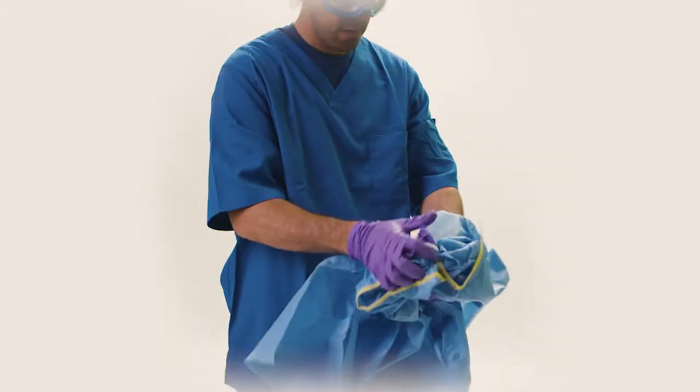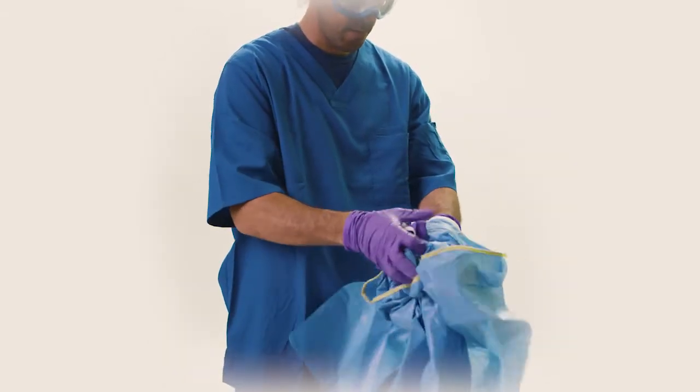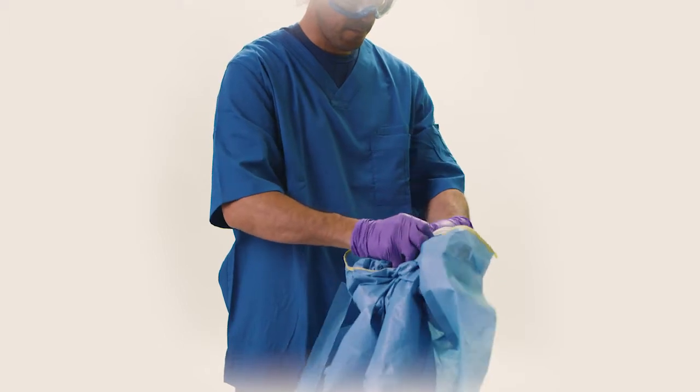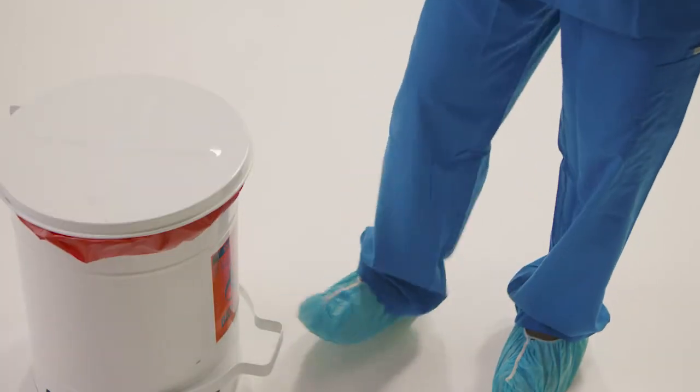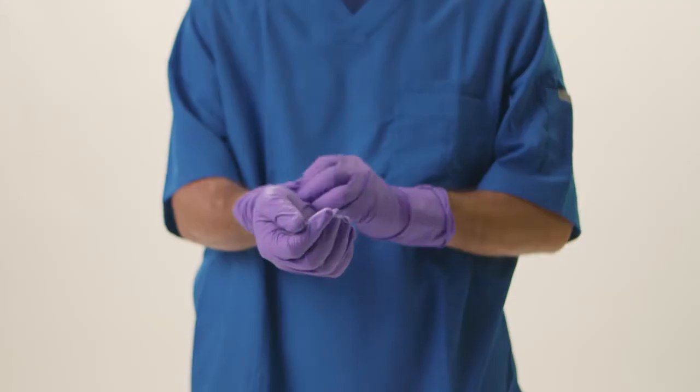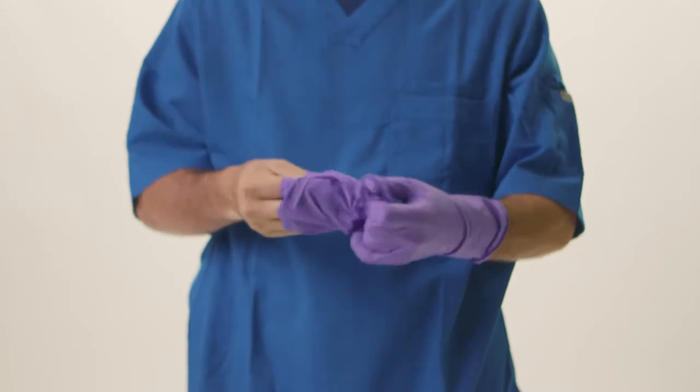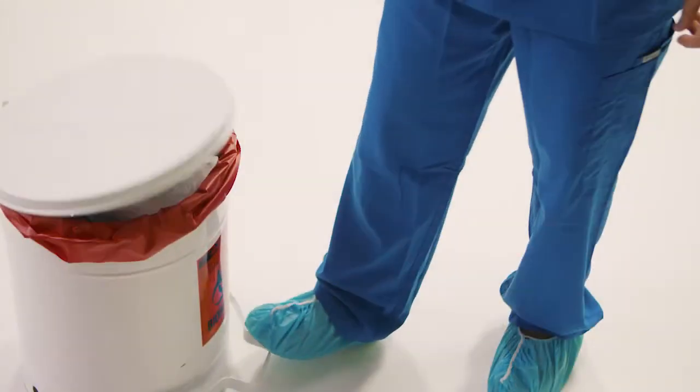With the sleeves of the gown rolled down, use the gown as a barrier layer and remove the outer pair of gloves. Roll the gown and outer gloves into a ball and dispose of them in a waste container. Remove the inner gloves and dispose of everything in the waste container.